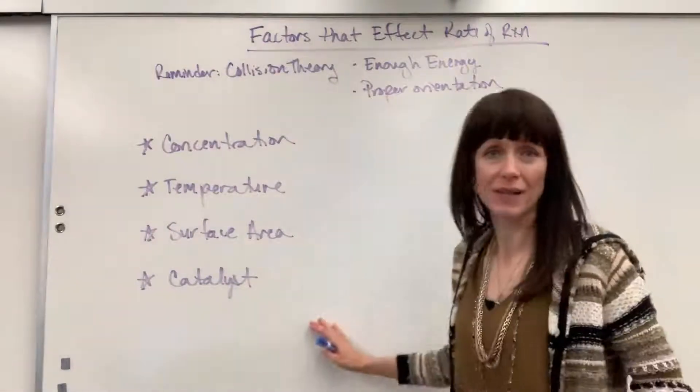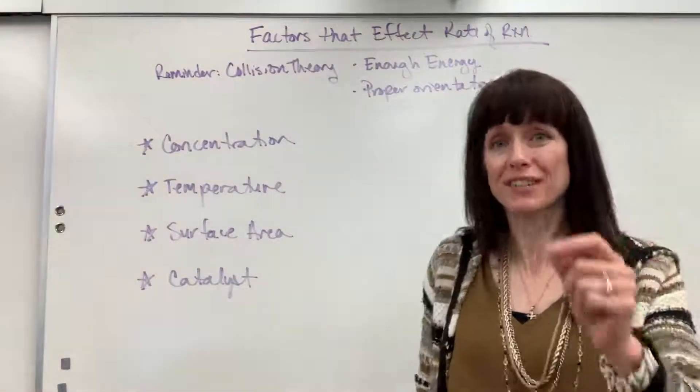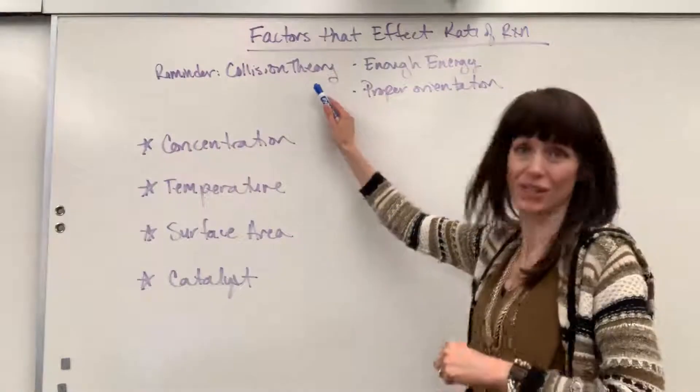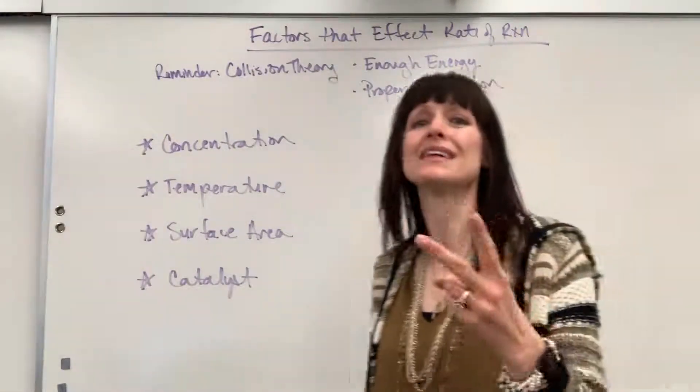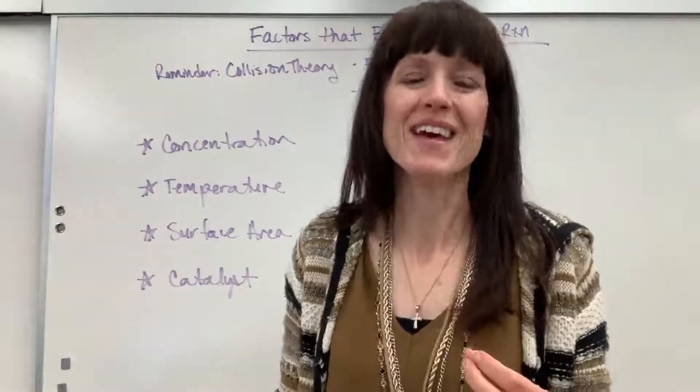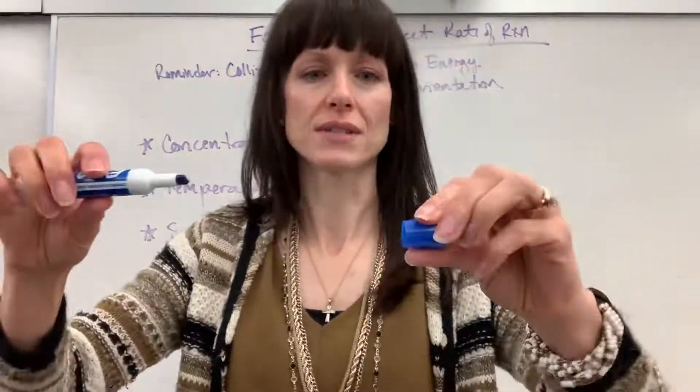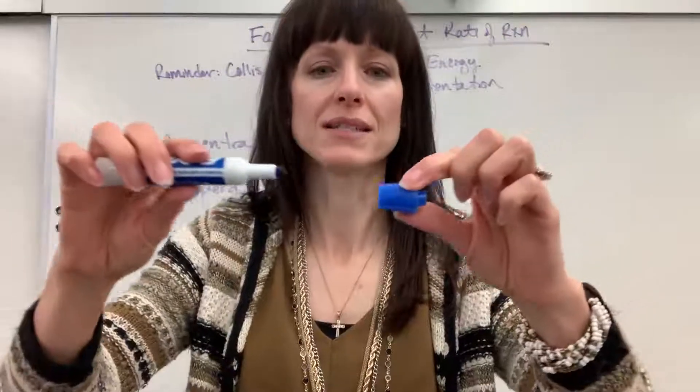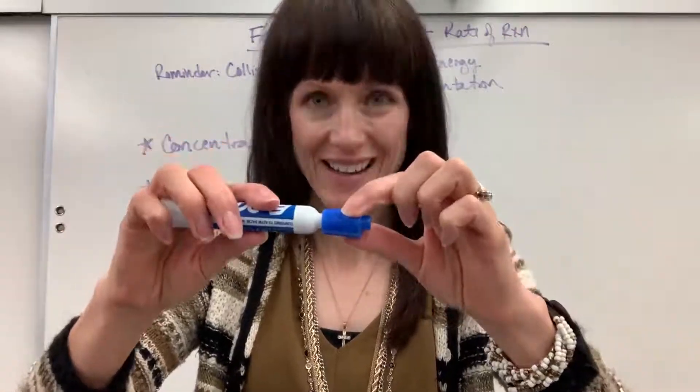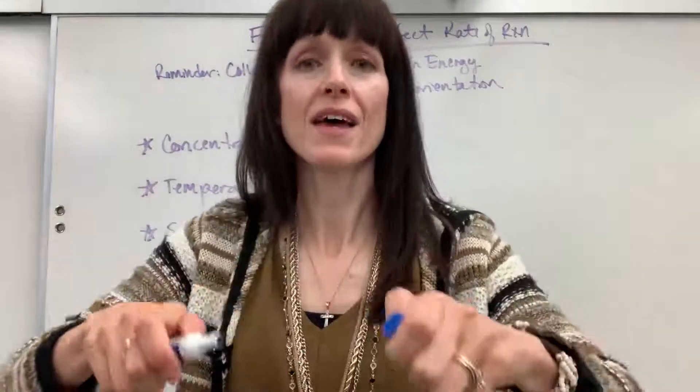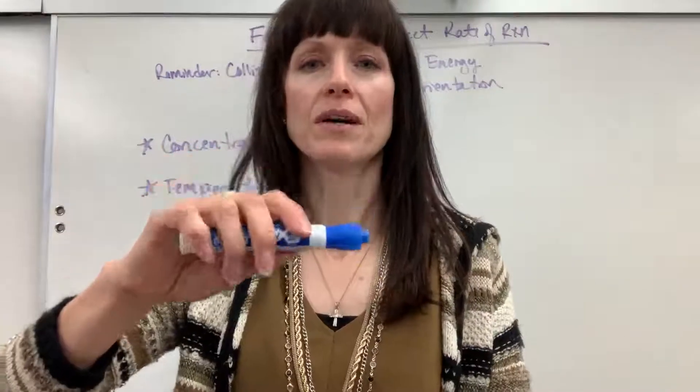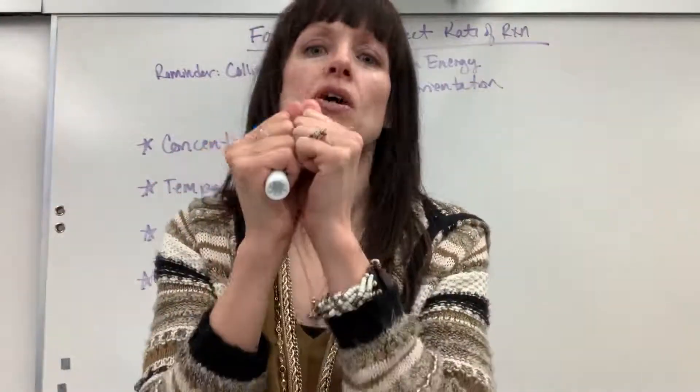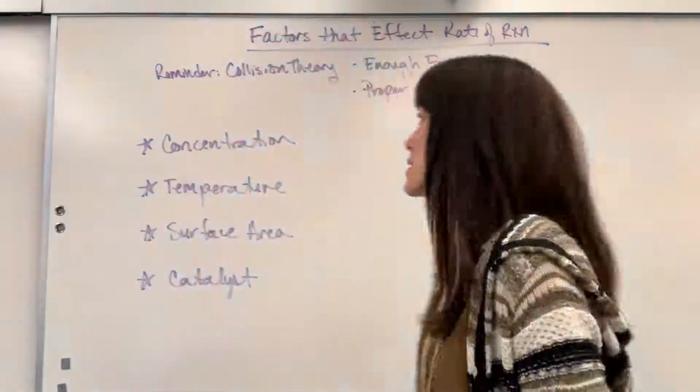Okay, now in order to talk about these four factors, we're going to justify them with collision theory. So really quick review. The collision theory tells us that we need two things in order for a reaction to happen. We have to have proper orientation. So for this cap to go onto this marker, it has to be properly oriented. Molecules have to hit at the right spot. And then you have to have enough energy. There has to be enough energy to force that cap onto the marker, just like there has to be enough energy when molecules hit in that correct position.